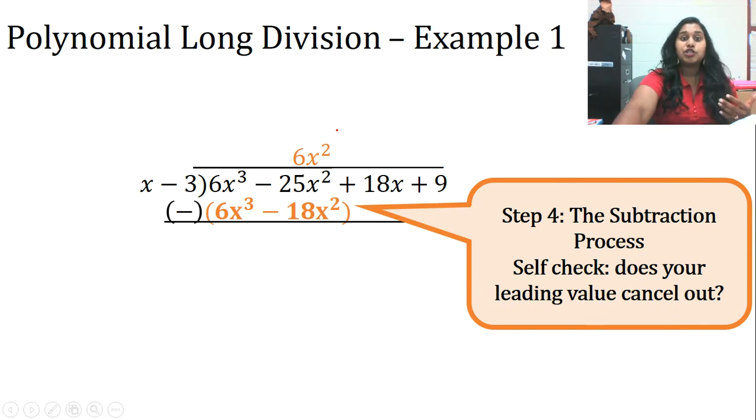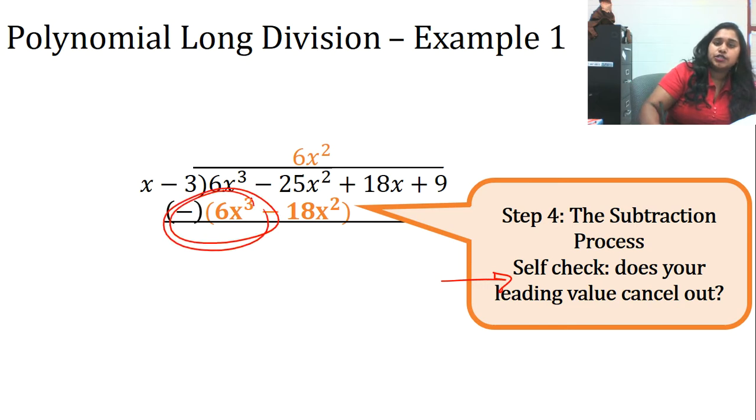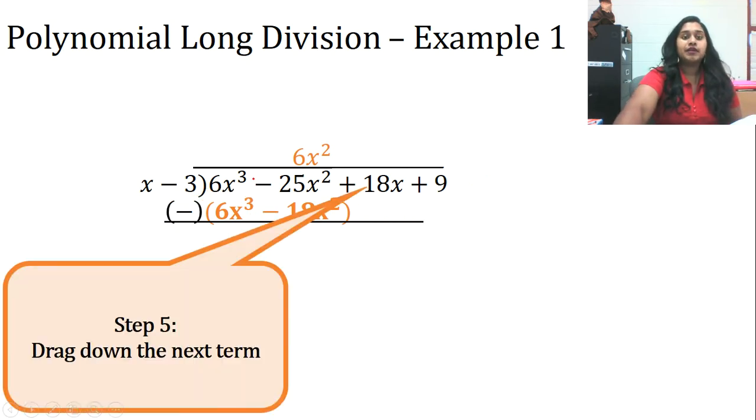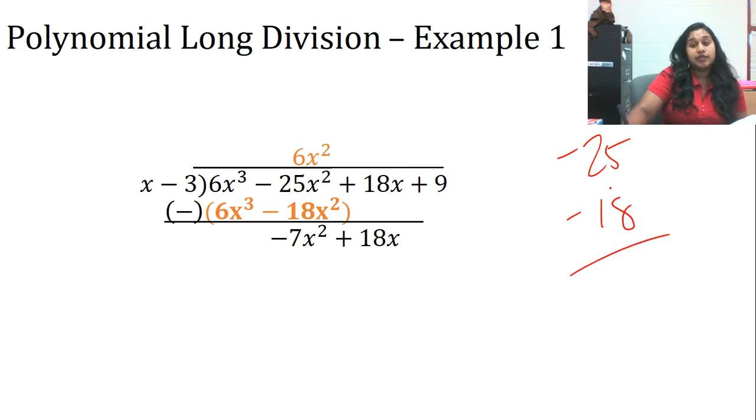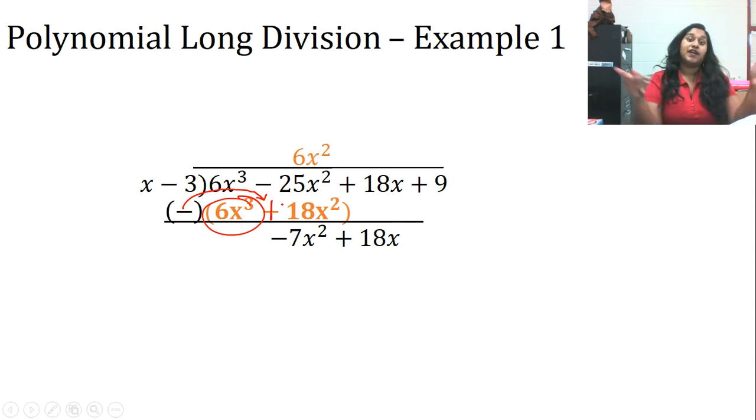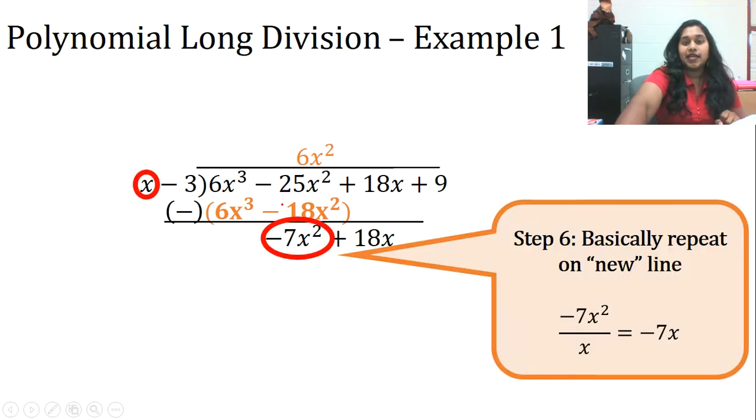Step 4, the subtraction process. Hey, really quickly, a brief self-check. Does your leading term cancel out? Then you're doing it right. Okay, so I'm going to drag that down. But before I drag that down, let's actually look at that subtraction. So a common thing I would see here is that students would try to do negative 25 and negative 18 and they would get a big negative value. But that's actually not what's happening. Do not forget to distribute this negative over. We usually remember this one, but sometimes we forget this one. So this actually becomes plus. And that's why it's negative 25 and positive 18 gives me negative 7.